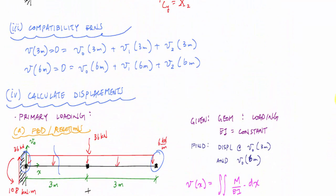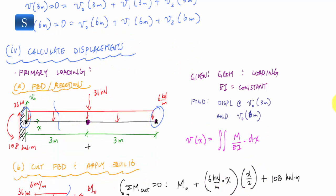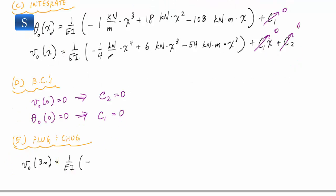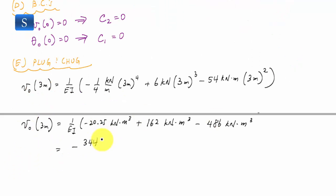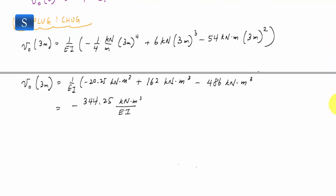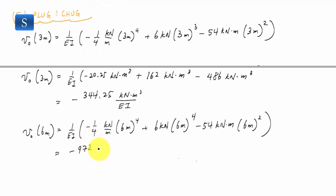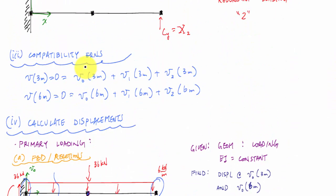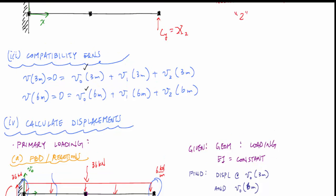I wanted the displacement at three meters and at six meters, so I just plug and chug. I get negative 344.25 kilonewton·meter³ over EI at three meters — the negative means it goes down. For v₀ at six meters I do the same calculation and get the corresponding value in kilonewton·meter³ over EI. Going back to the compatibility equation, that means I've solved two of the required displacements — four more to go.